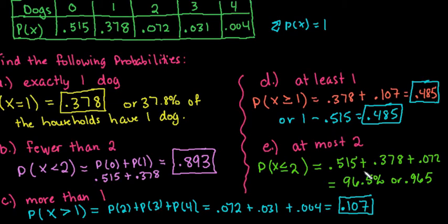There's a 96.5% probability in this particular neighborhood of selecting a house at random that has at most 2 dogs.